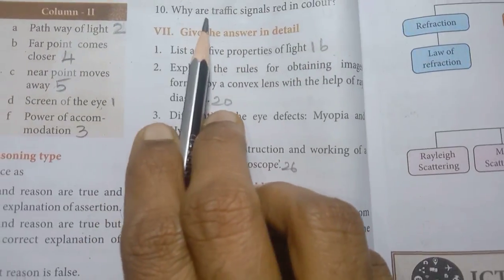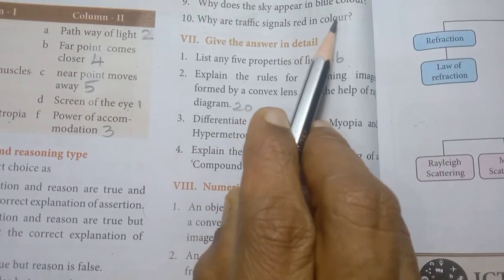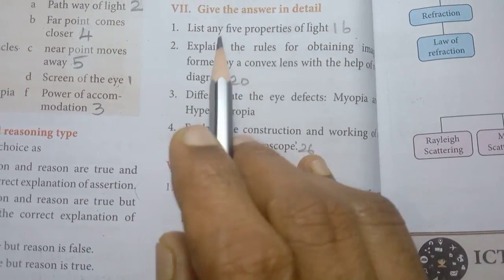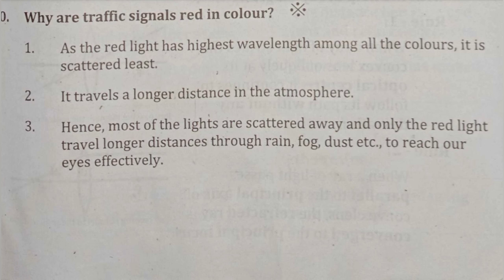Question 10 — why are traffic signals red in colour? First point: red light has the highest wavelength among all colours, so it is scattered least. Second point: it travels a longer distance in the atmosphere. Third point: hence most other lights are scattered away, and only red light travels longer distances through rain, fog, dust, etc., to reach our eyes effectively.